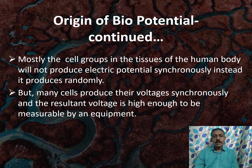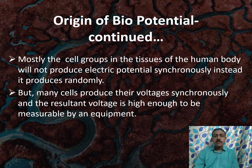Mostly, the cell groups in the tissues of the human body will not produce the electric potential synchronously. Instead, it produces the potential randomly. But many cells produce their voltages synchronously and the resultant voltage is developed, and this voltage is high enough to be measured by an equipment.